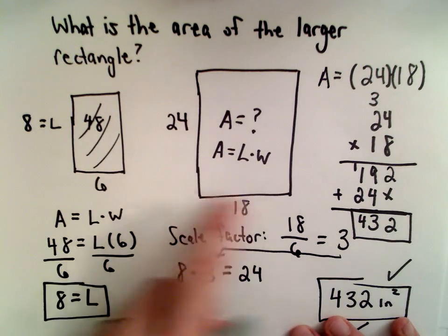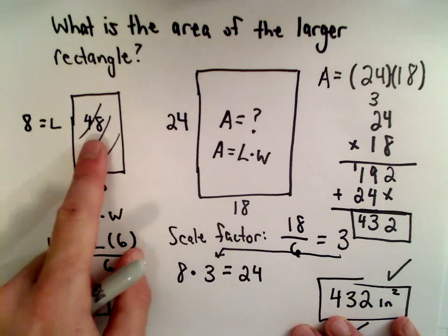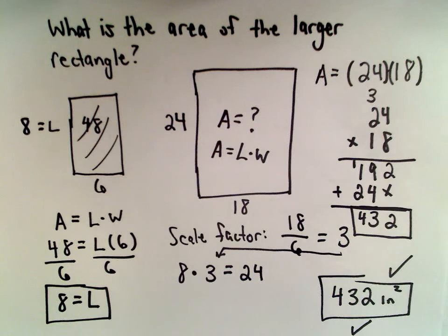So just be careful about that. The side lengths do have the scale factor of 3. But that doesn't work for areas. So just be careful about that little mistake. It would be an easy mistake to make. So just want to point that out and make you aware of it.